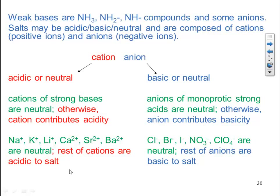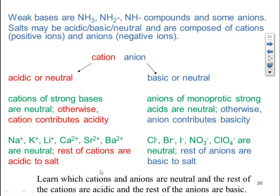In summary: the neutral cations to memorize are sodium, potassium, lithium, calcium, strontium, and barium — any other cation contributes acidity to the salt. The neutral anions to memorize are Cl⁻, Br⁻, I⁻, NO3⁻, and ClO4⁻ — the rest of your anions are basic and add basicity to the salt. So you learn which cations and anions are neutral, and the rest of the cations are acidic and the rest of the anions are basic.